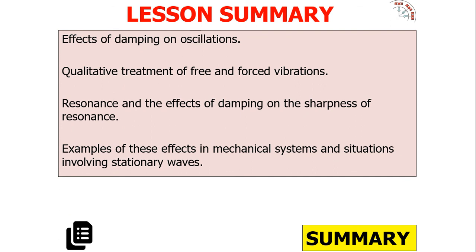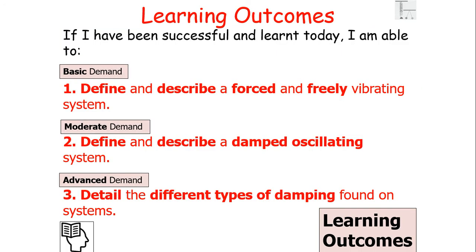In today's lesson we should now understand the effects of dampening on oscillations, have a qualitative treatment of free and forced vibrations, and have started to explore the idea of resonance — with dampening and the sharpness of resonance to follow in future lessons. We should be able to define and describe a free and forced vibrating system, and define and describe the damped oscillating system and the different types of dampening. I hope you've enjoyed this lesson on free vibrations, forced vibrations and dampening — have a lovely day.